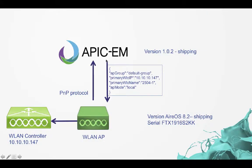The demonstration today is with shipping code — APIC-EM version 1.02 which has been shipping for a little while. We're going to be using Eros 8.2 which has just come out. In this particular example, a new access point that I'm going to reset to factory defaults is going to use the plug-and-play protocol to get a configuration file downloaded to it, containing things like the access point group, the primary wireless LAN controller IP and name. Note that I could have a primary, secondary and tertiary here, and also the access point mode. In this particular example the access point is going to be local, but it could be flex or other deployment modes.